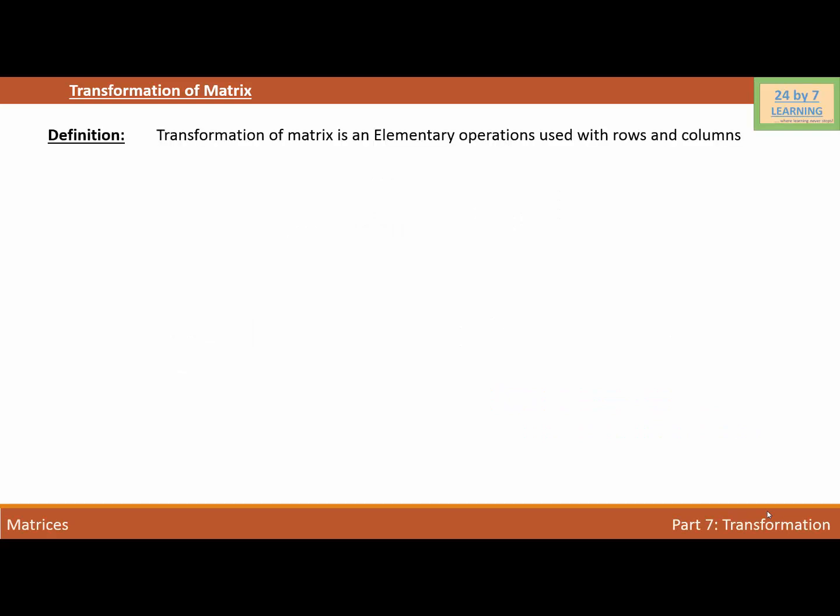Transformation of a matrix is an elementary operation used with rows and columns of the matrix to simplify or reduce the matrix. There are six elementary operations of the matrices — three of them are used with rows and the other three are used with columns.